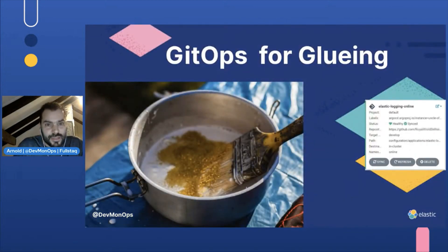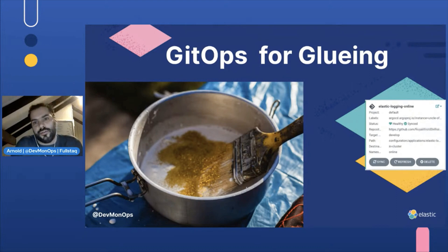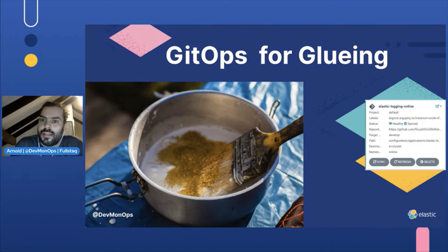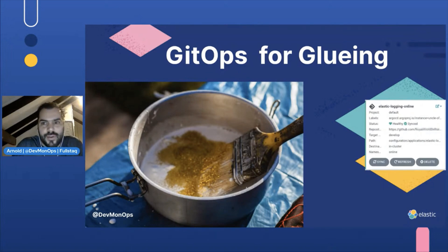The first subject is GitOps. We used GitHub for gluing everything together. We set up Argo CD to ensure all our resources were in our desired state. We used only one GitHub repository as our trusted source. Argo CD itself gives really good insights into the dependencies and connectivity of our Elastic environment.